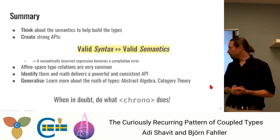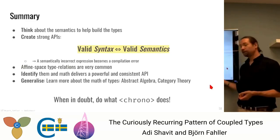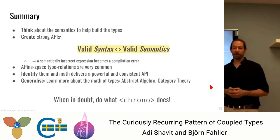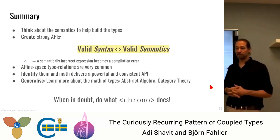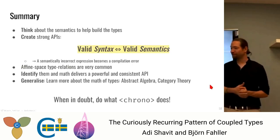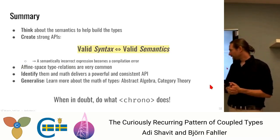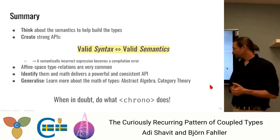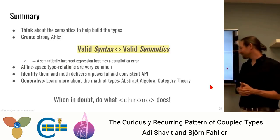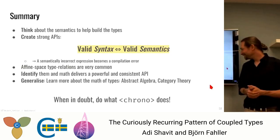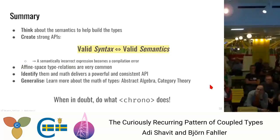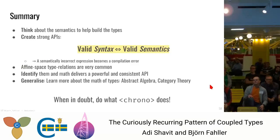Learn more about abstract types, read more about abstract algebra and category theory. When in doubt, do what Chrono does — because Chrono is awesome in absolutely every way. Minded though: since Chrono doesn't allow you to multiply durations to get 'seconds squared,' whereas in physics units that's a perfectly natural thing to do, you have to think about what you're modeling. If you're in a one-dimensional world, absolutely do what Chrono does. In multiple dimensions, Chrono is often a very good guide unless you have specific reasons to do otherwise.